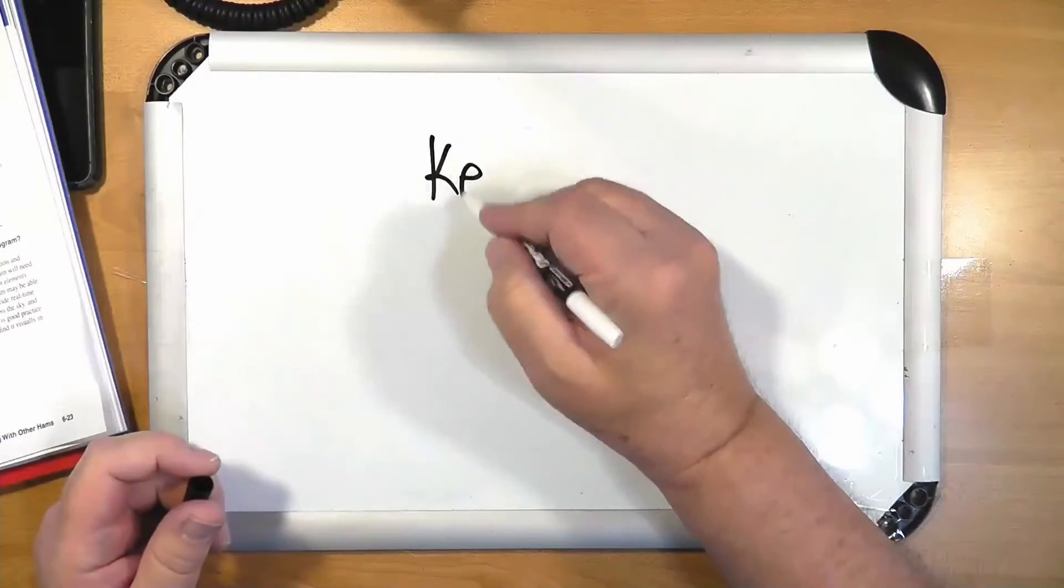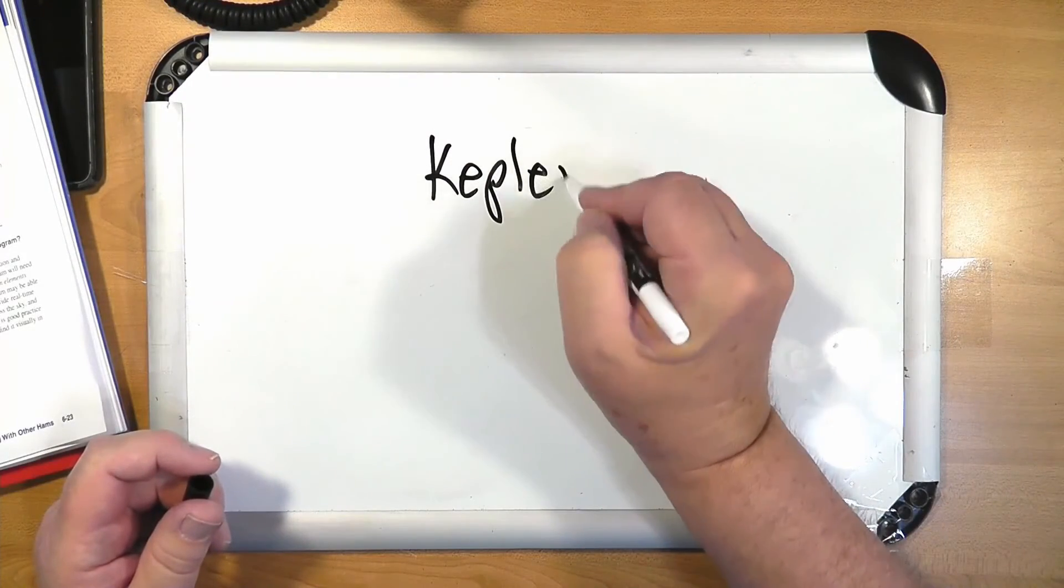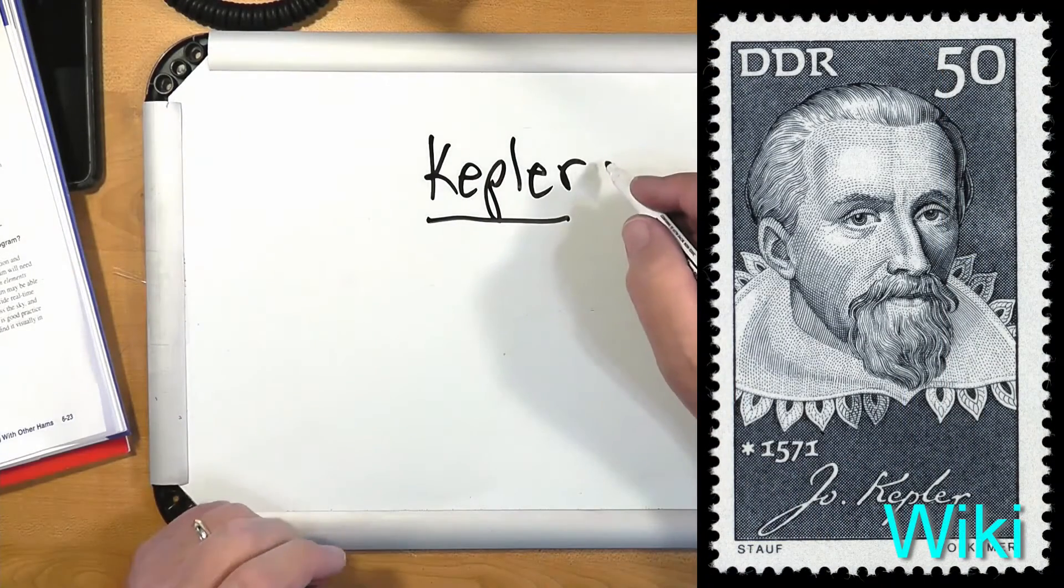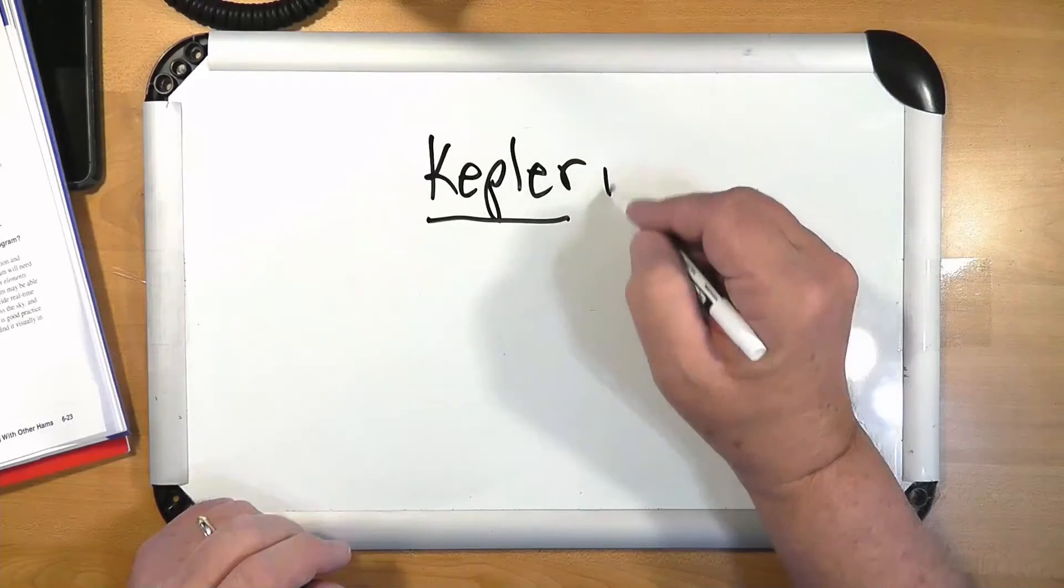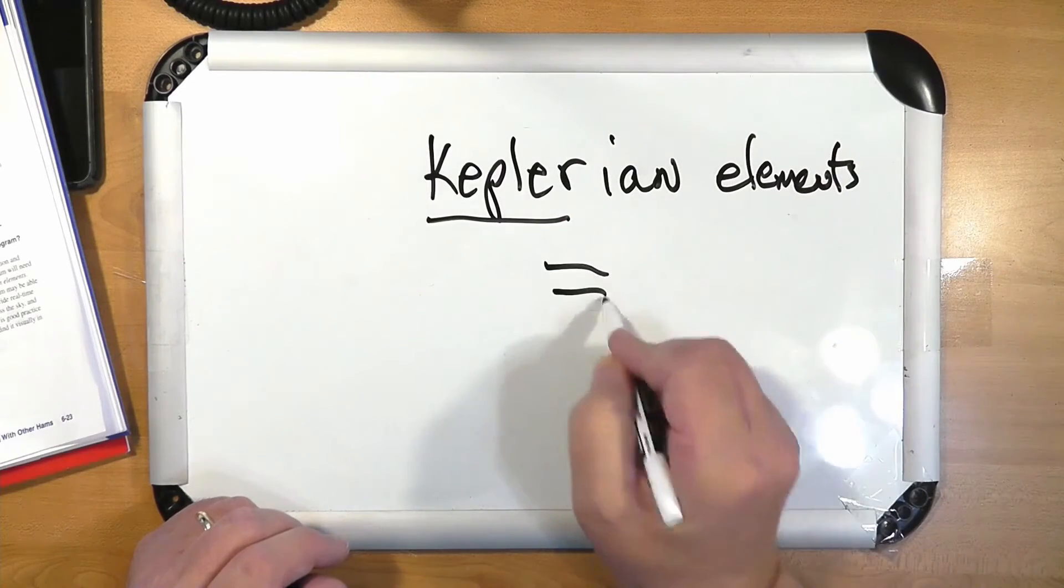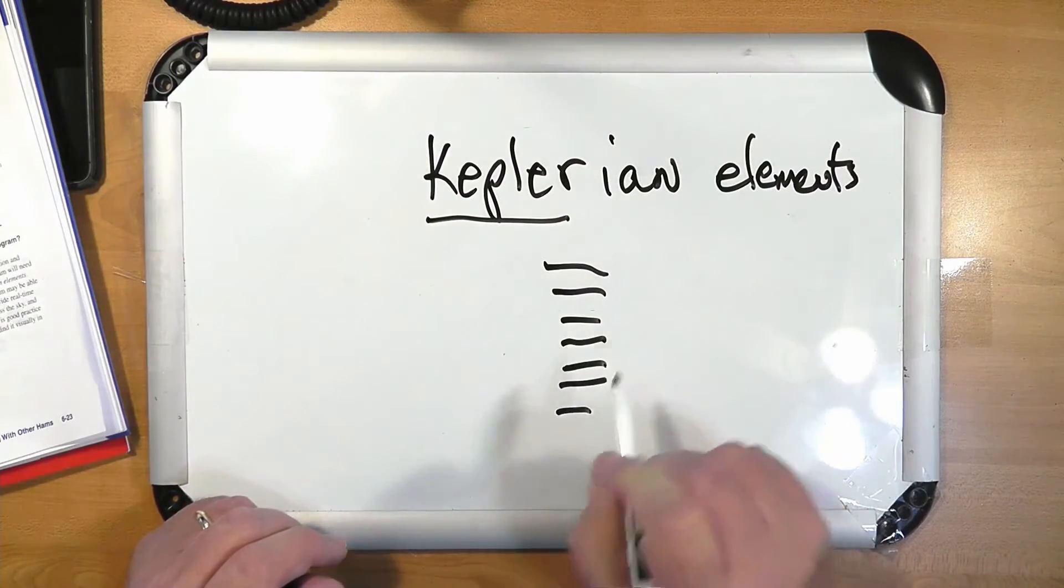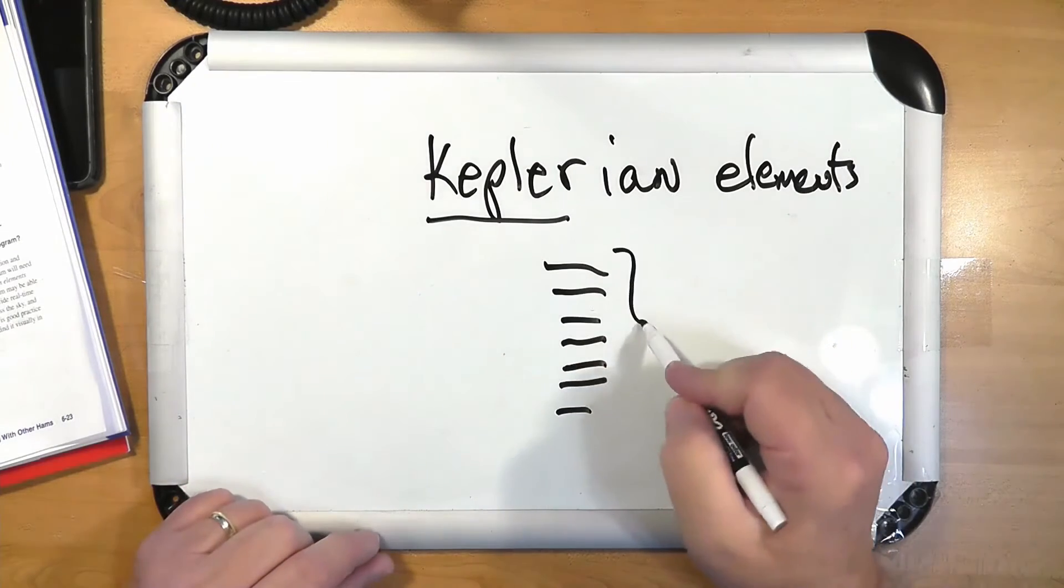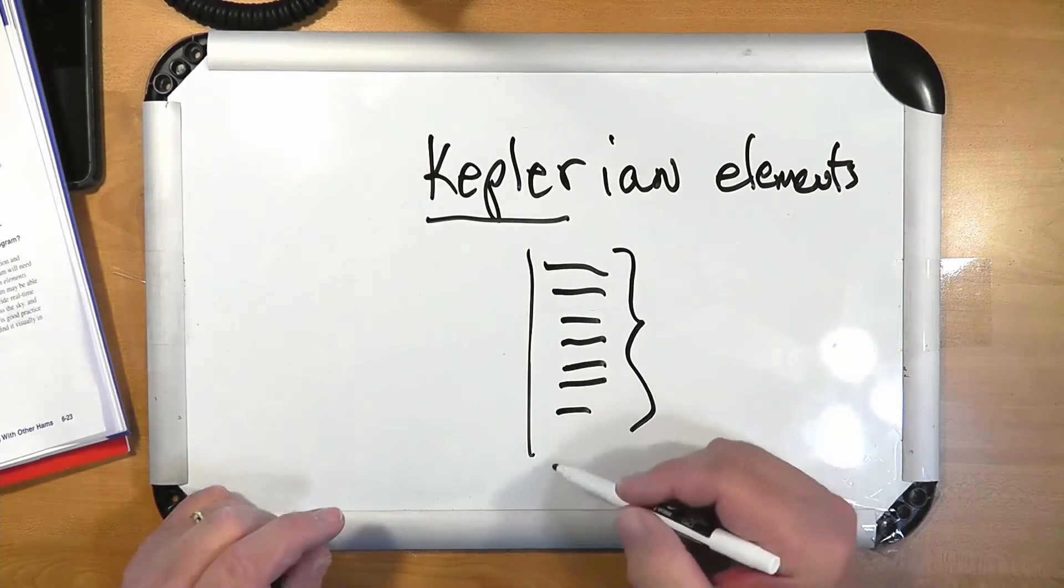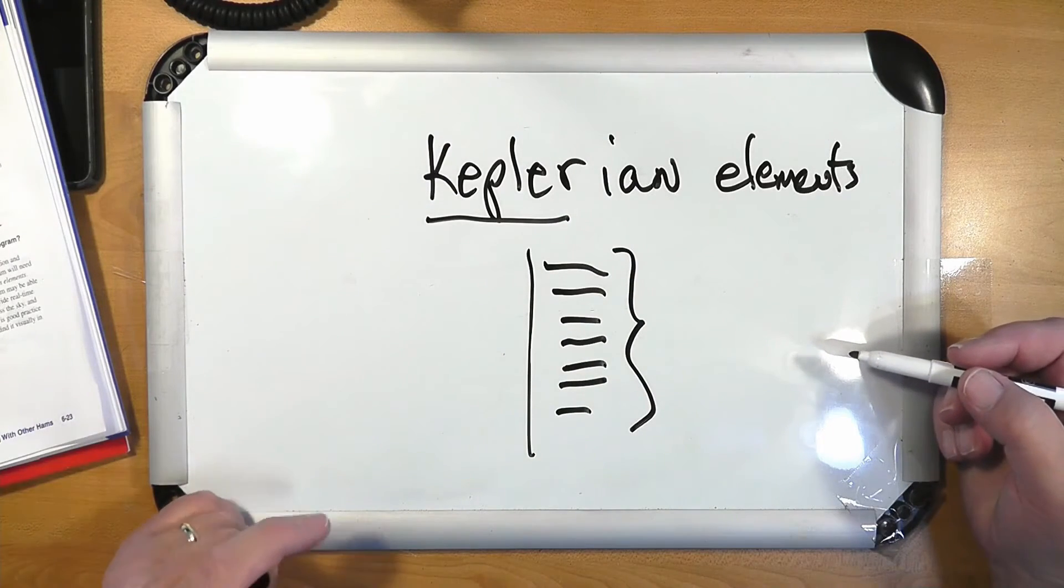The way that we track satellites is there was a guy who developed the orbit theory by the name of Kepler, lived several hundred years ago, and Keplerian elements are a set of numbers that describe an orbit. These are the Keplerian elements, and if you have these, you can put these in your favorite orbit tracking program, and it will tell you where the satellite is or will be.